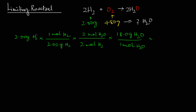Now we can go ahead and cancel the units. Gram H₂ cancels, mol H₂O cancels, and the factor of 2 in the denominator and numerator cancels — 2 divided by 2 is 1. So we are left with 18.0 grams of water as the remaining unit, and we include the 2 grams of hydrogen and 2.02 as the denominator to get the value.